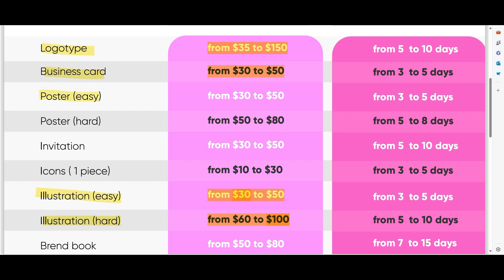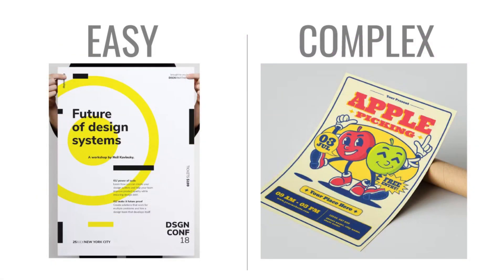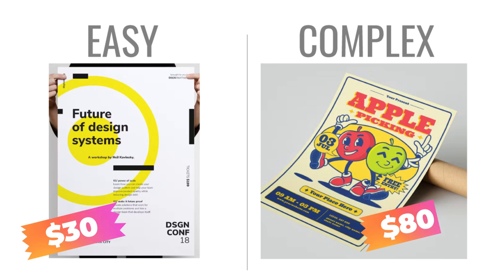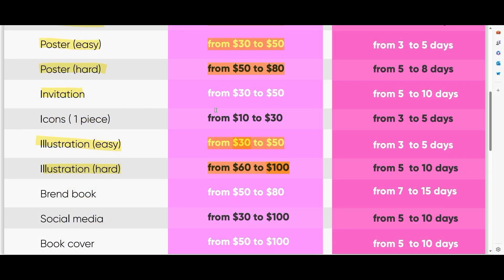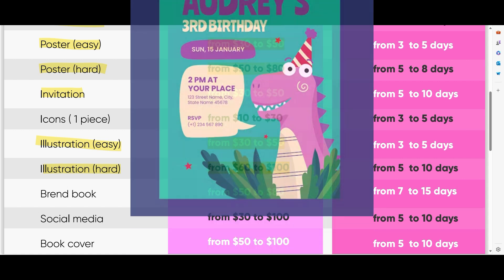Next we have poster easy and poster complex — because as you understand, easier design has a lower price and more complex design has a higher price. Here you see an easy poster and a complex poster: the easy poster will cost $30, the complex poster will cost $80.